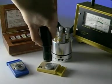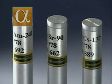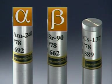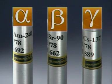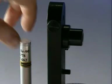There are three different types of nuclear radiation: alpha, beta and gamma. Each has a different penetrating power.